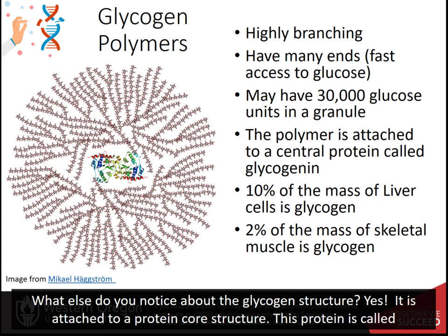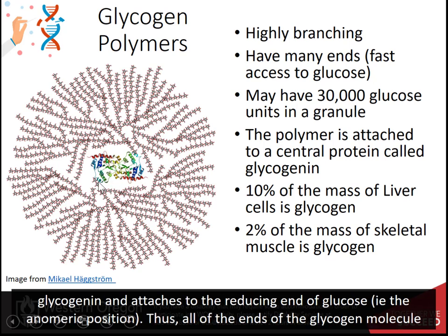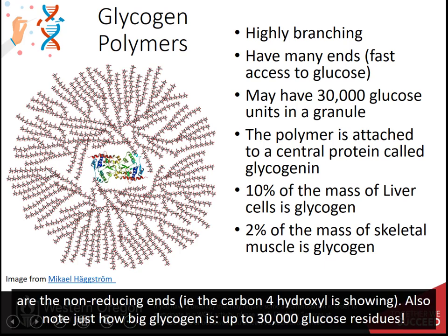The glycogen structure is also attached to a protein core. This protein is called glycogenin and it attaches to the reducing end of glucose — that means the anomeric position. Thus, all of the ends of the glycogen molecule are non-reducing ends, meaning the 4' hydroxyl is exposed at the ends.